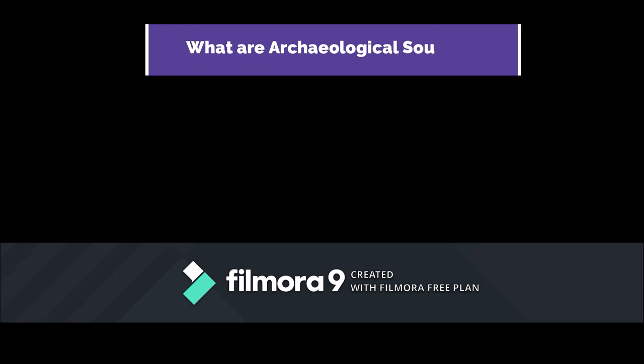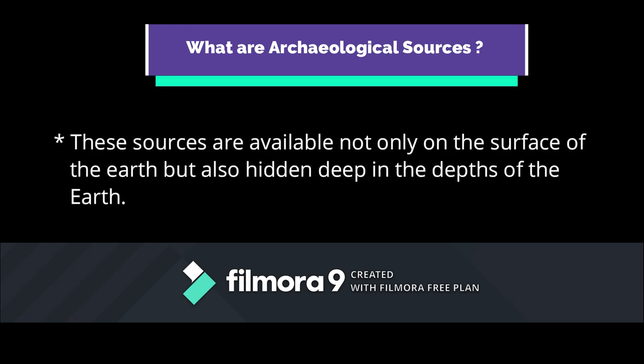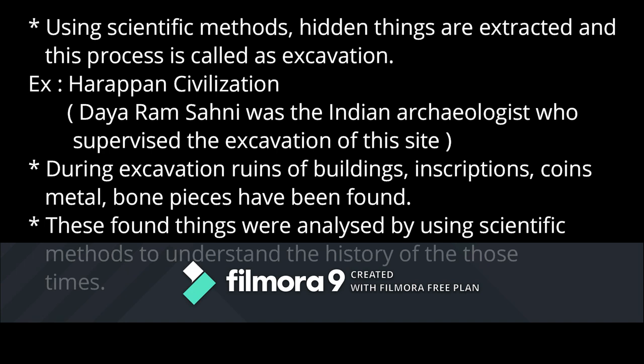The second major type of primary sources is archaeological sources. These sources are available not only on the surface of the earth but also hidden deep underground. Using scientific methods, hidden things are extracted through a process called excavation. A key example is the Harappan civilization, where Dayaram Sahni was the Indian archaeologist who supervised the excavation. During excavation, ruins of buildings, inscriptions, coins, terracotta pieces, bangles, beads, metals, and bone pieces were found and analyzed to understand the history of those times.